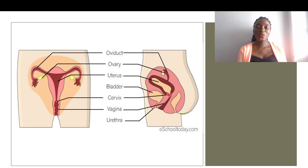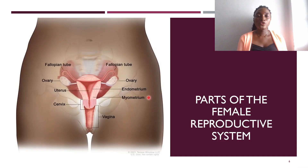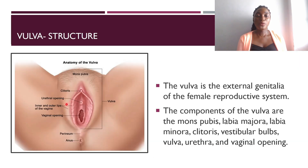In females, we have a vagina, which is responsible for the reproduction process, and then we have the urethra, which connects to the bladder for the passage of urine. The parts of the female reproductive system we'll be looking at are shown in this image, so let's zoom right into it.